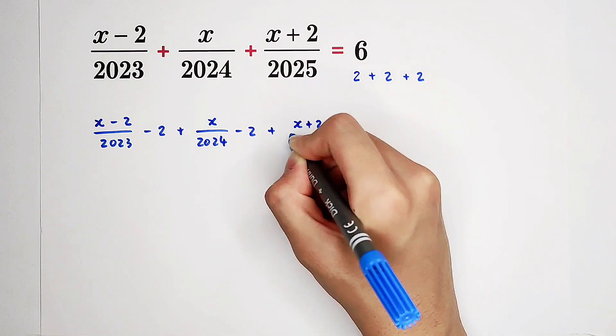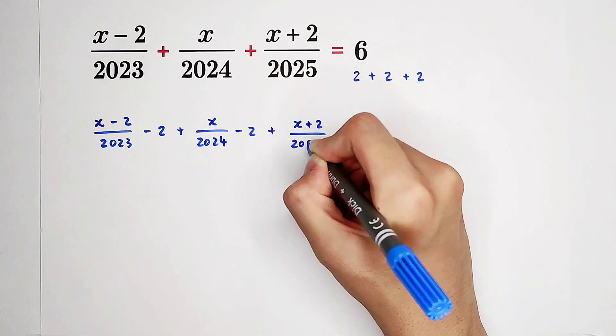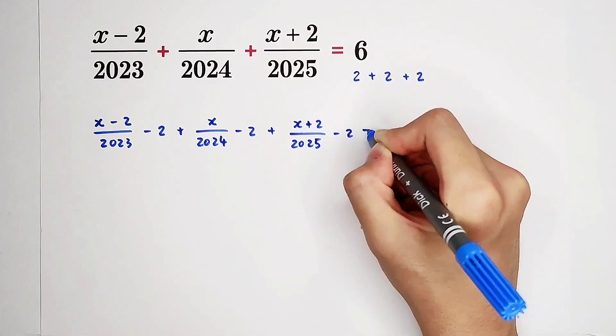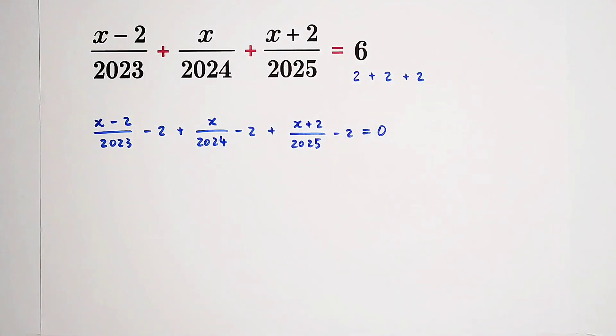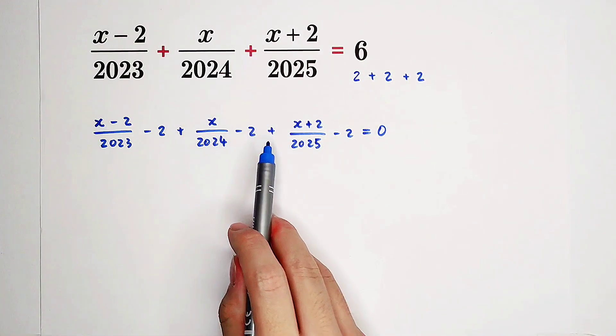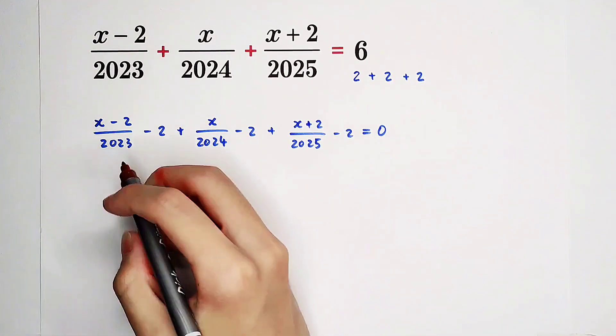X plus two here over 2025 minus two equals zero. So these two equations are equivalent. Now, let's calculate.